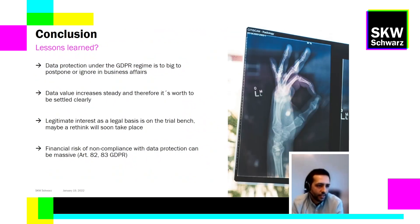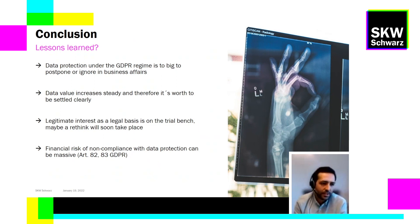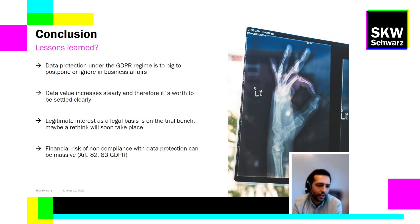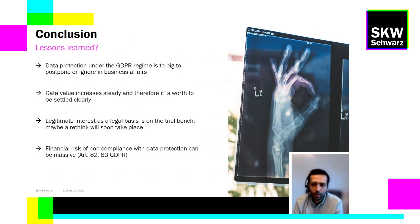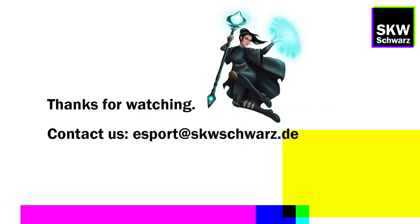In conclusion — lessons learned: data protection under the GDPR regime is too big to postpone or ignore in business affairs, especially as data value steadily increases and should be settled clearly. The current go-to legal basis of legitimate interest is on the trial bench, as we see in the Red Card Project, and a rethink may happen soon as we search for other legal bases. Finally, the financial risk of non-compliance is massive, as regulated in Articles 82 and 83 GDPR, with high fines and compensation claims. Thank you all.